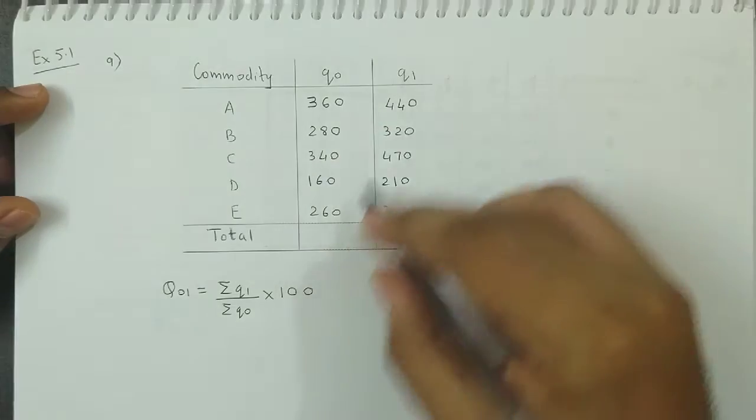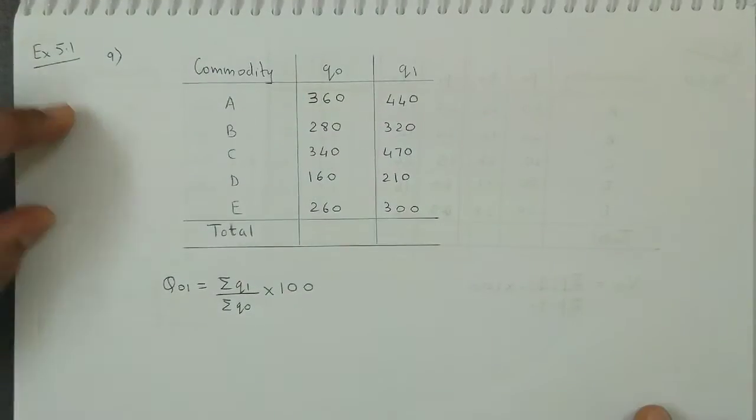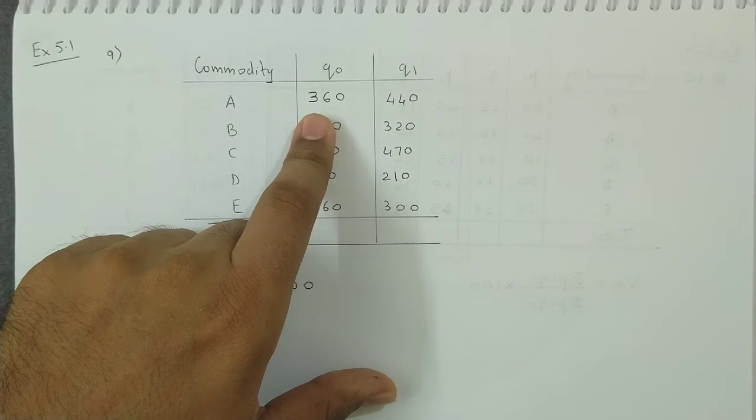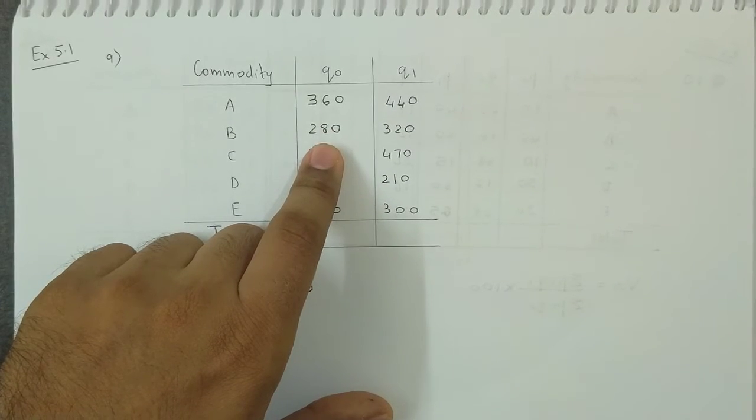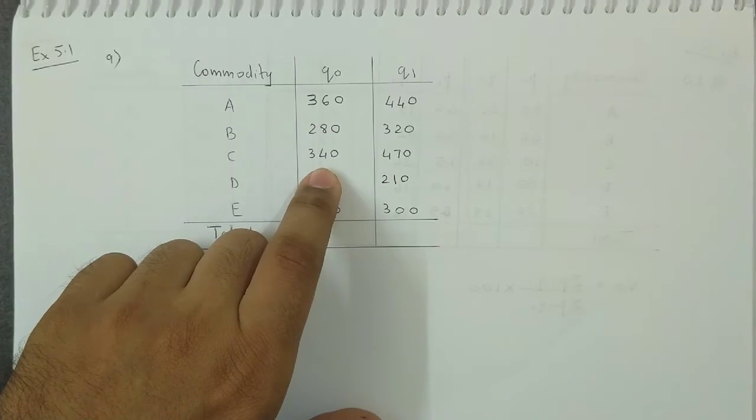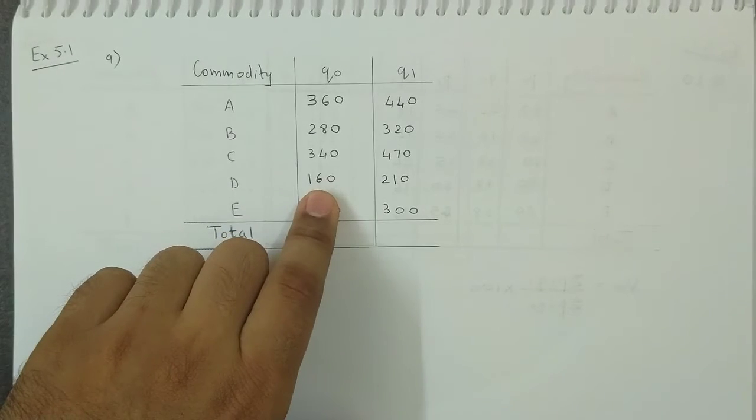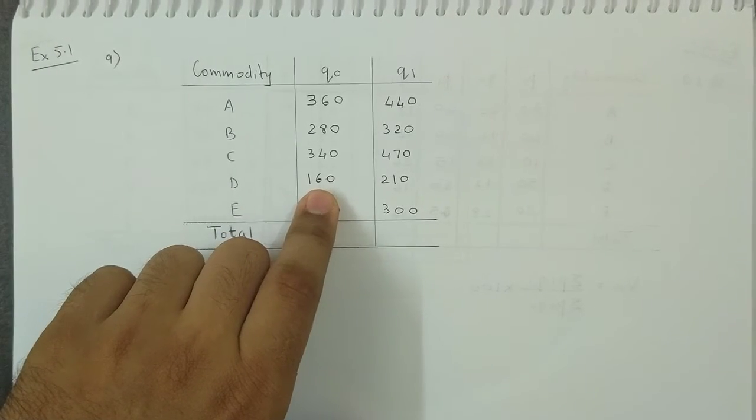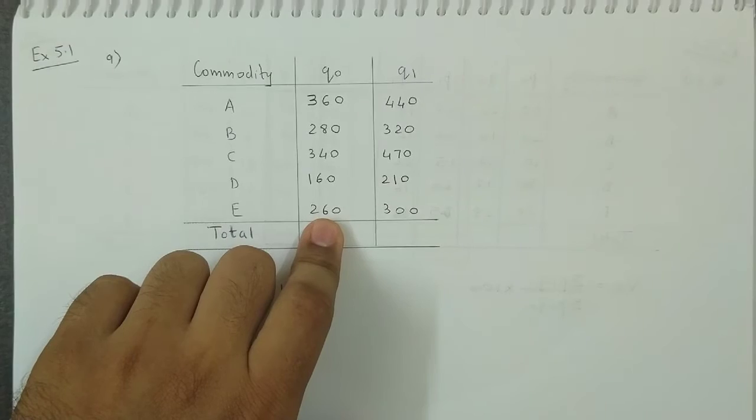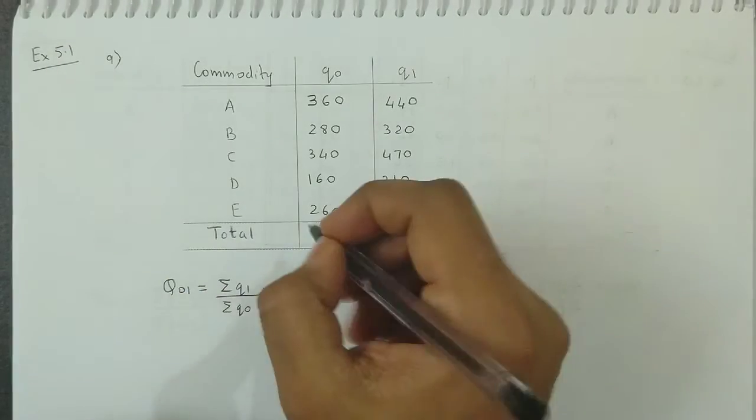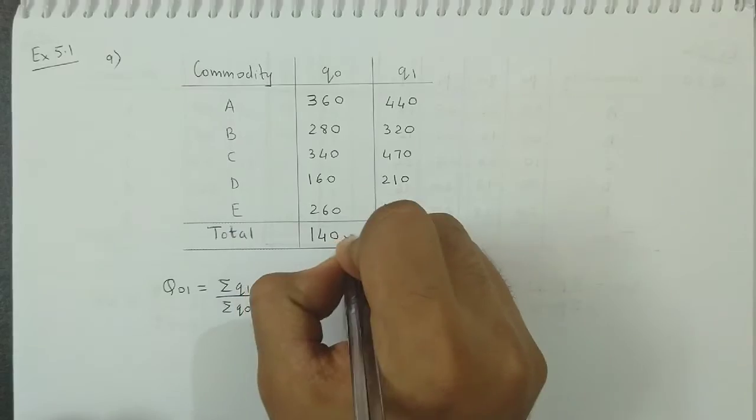Let us add the two columns. Let us see what we obtain. The first value is 360, next is 280, next is 340, next one is 160, next is 260. This total is 1,400.